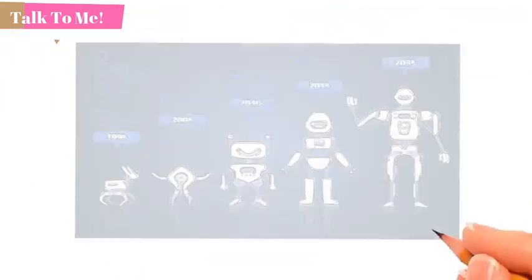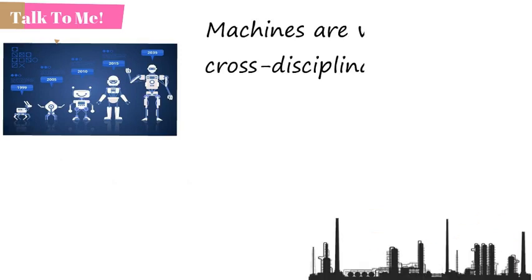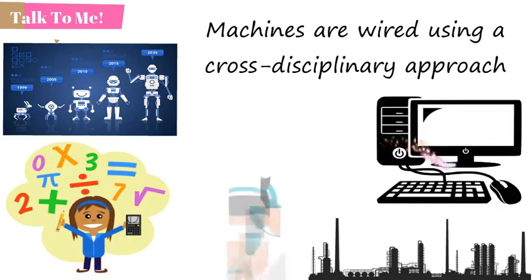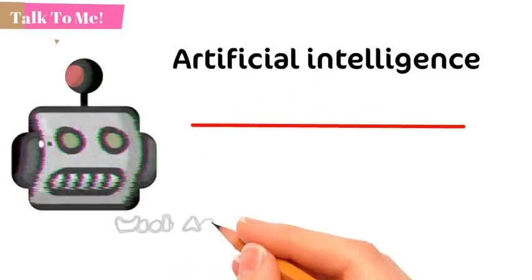Artificial intelligence is continuously evolving to benefit many different industries. Machines are wired using a cross-disciplinary approach based in mathematics, computer science, linguistics, psychology, and more. Artificial intelligence can be categorized into weak AI and strong AI.